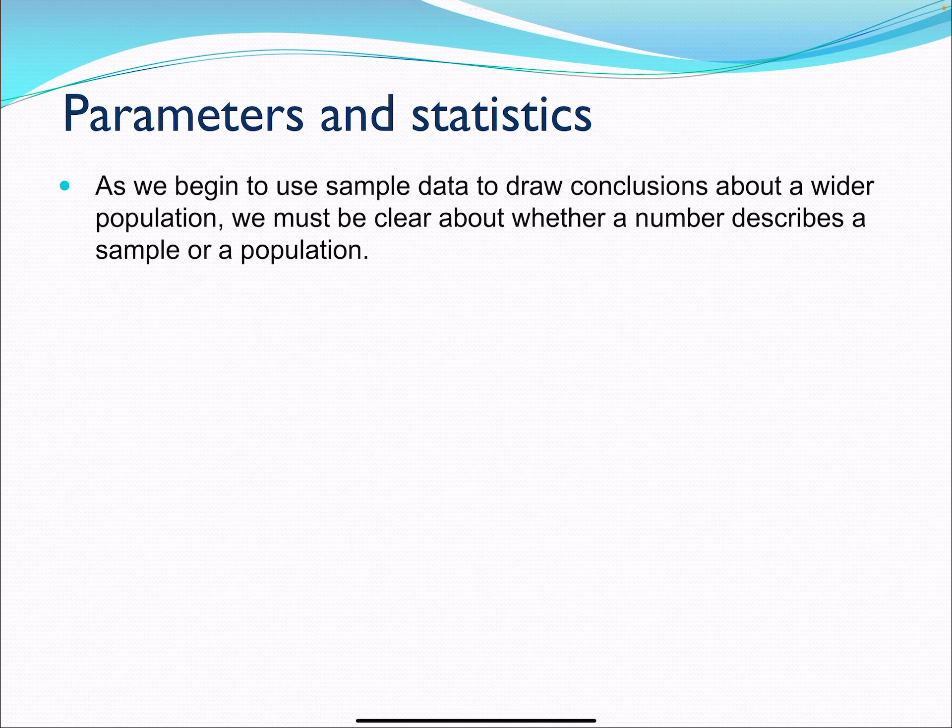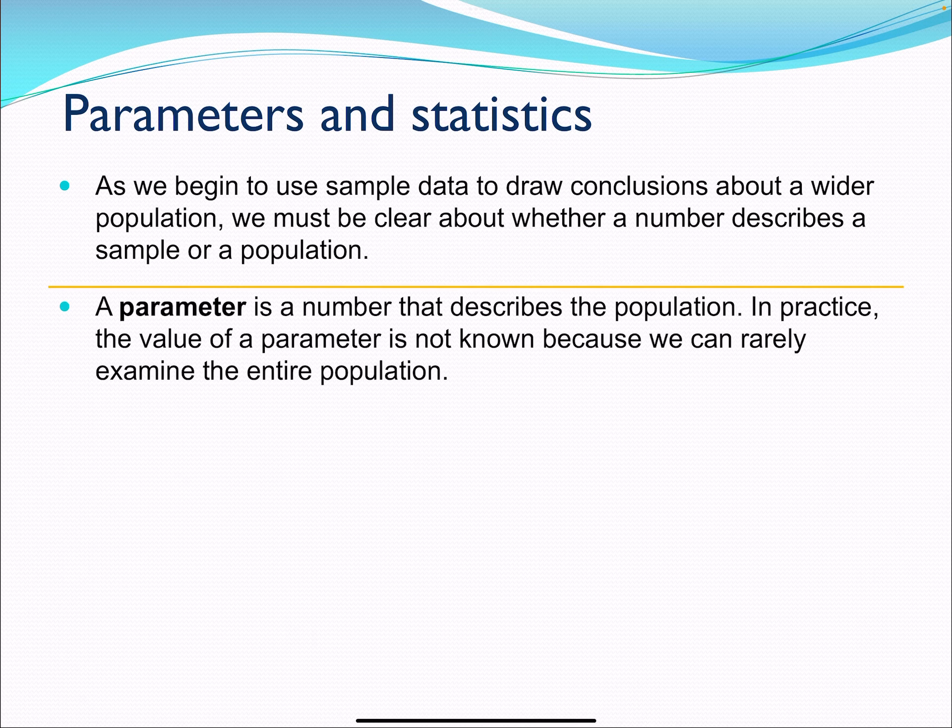As we begin to use sample data to draw conclusions about a wider population, we need to be clear about whether a number describes a sample or a population. I've discussed this before, but I'm going to say it again because we tend to mess it up sometimes. A parameter is a number that describes our population. Think parameter population—the P's go together.